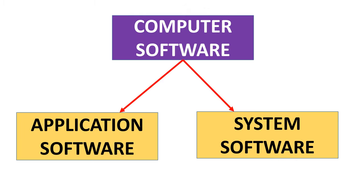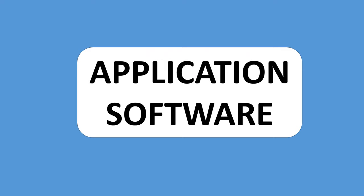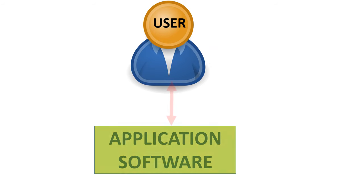Computer software is divided into application software and system software. Application software are programs that help the user perform specific tasks.